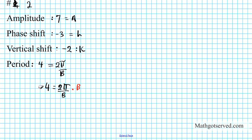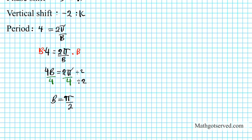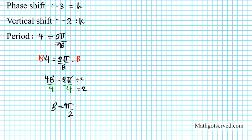Multiply both sides by b first — notice how b migrates to the top. You have 4b equals 2π. Then divide both sides by 4 to isolate b, giving b equals π over 2, because you divide both top and bottom by 2 to reduce the fraction. So b equals π over 2. Notice if you just switch b and 4, you get 2π over 4, which reduces directly to π over 2 — that's the quick shortcut.